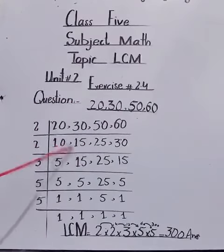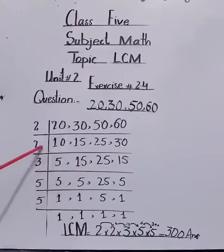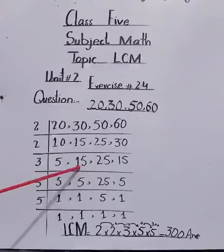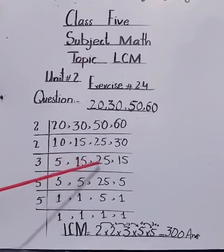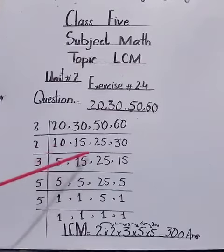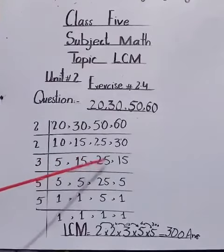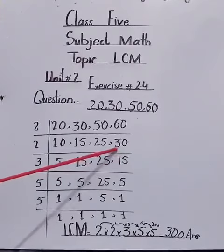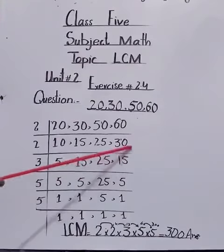2 times 5 are 10. 15 will not divide on table of 2, so it will come down same. 25 also will not divide on table of 2, it also will come down same. 2 times 1 is 2, from 3 we will take up 2, 1, and then 10 divided by 2, 5 times 2 are 10.